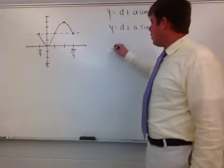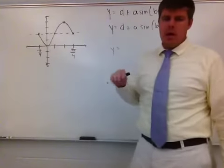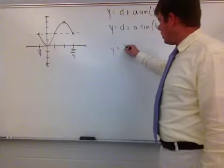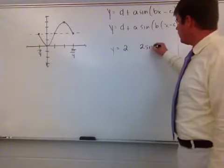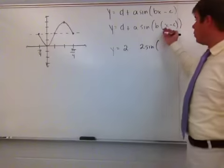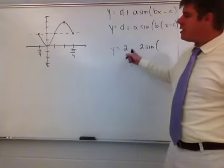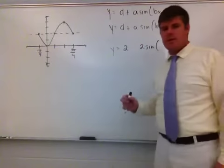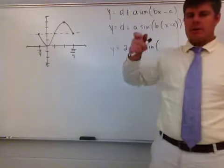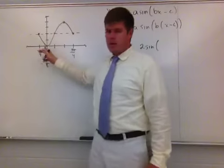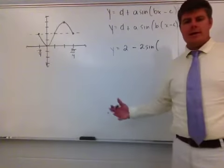The vertical shift d is up from the x-axis, represented by positive 2. The amplitude a is also 2, which we just calculated. Now I need to decide if the sine term is positive or negative. This function starts at its midpoint value and goes down to a minimum, so this is a negative sine function — making it negative 2 sine.